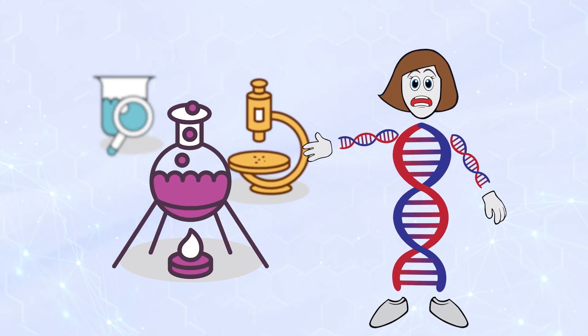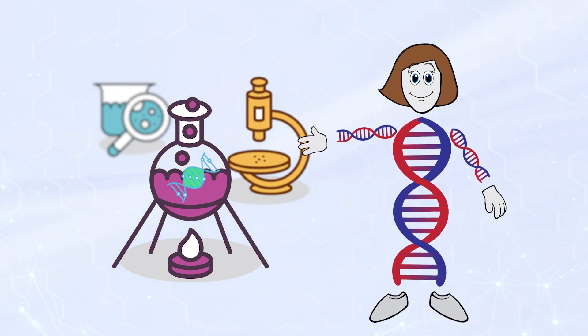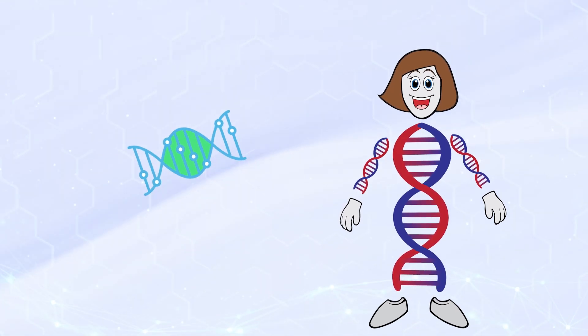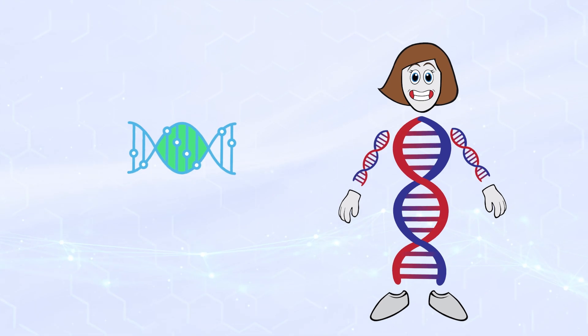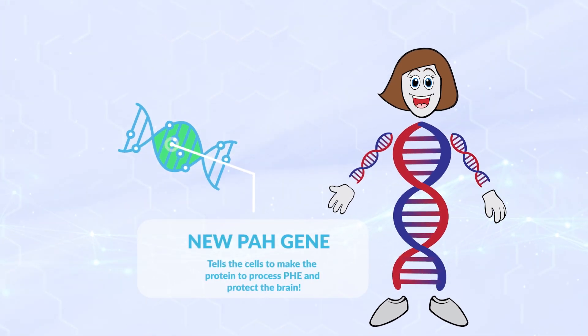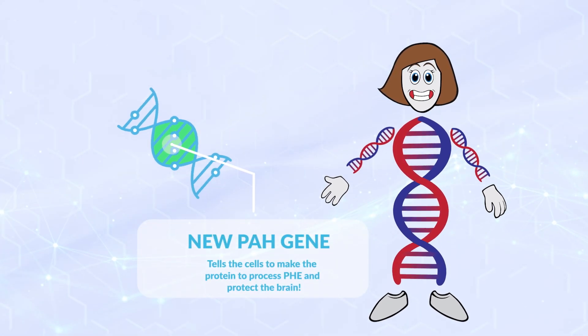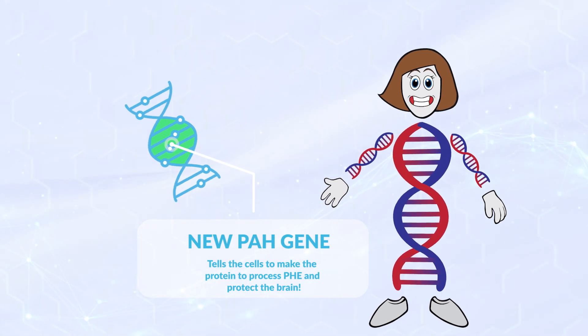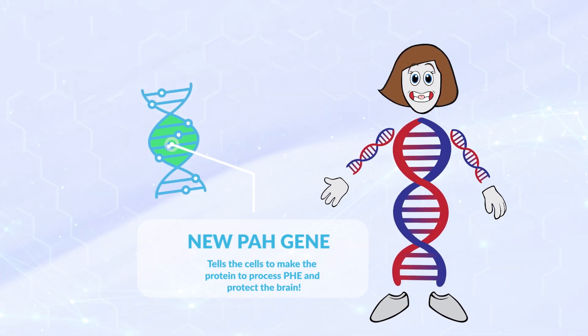The PAH gene is made outside the body in a lab, and then it's transferred into the body to replace the mutated PAH gene. This new PAH gene will tell the cells to make the protein that will process Phe and help protect the brain.